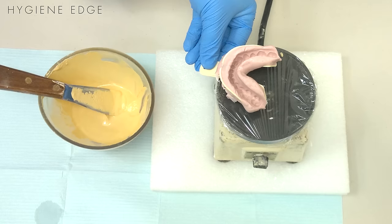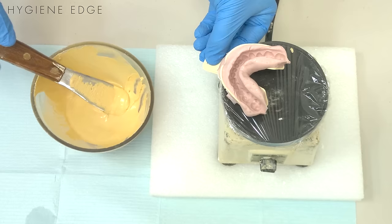The first thing you want to do is grab your impression in your non-dominant hand and place it on the edge of your vibrator. You're also going to use your spatula in your dominant hand.